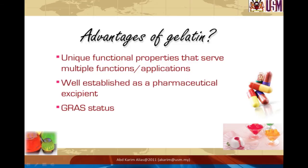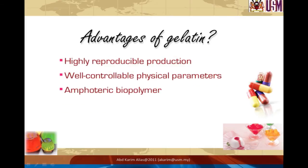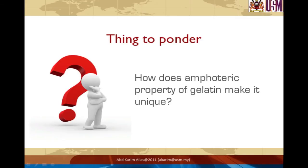Gelatin also has GRAS status. Other advantages include highly reproducible production, meaning quality is consistent from batch to batch with well-controllable physical parameters such as gel strength. Gelatin, like any other protein, is amphoteric, so we can manipulate its properties by changing the pH of the system. This property is important, for example, when gelatin is used as a fining agent in fruit juice clarification. How does the amphoteric property of gelatin make it unique? Try to do some reading and find the answer.